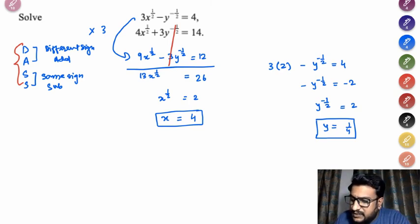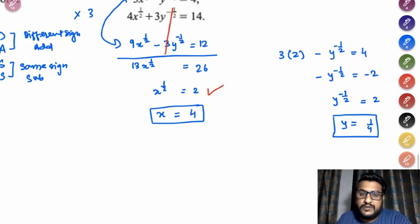So once you add 9 plus 4, 13 x to the power half, this will cancel out, 14 plus 12 is 26, so x to the power half equals to 2. So x to the power half is 2, now squaring both sides will give me x equals to 4.